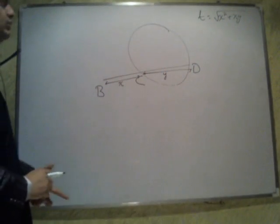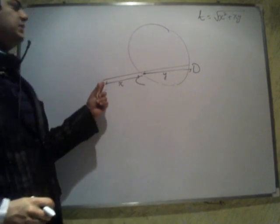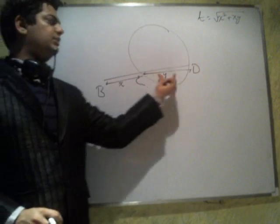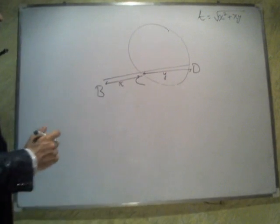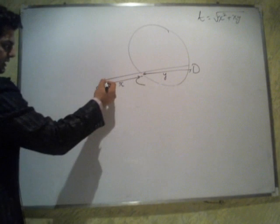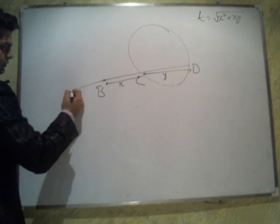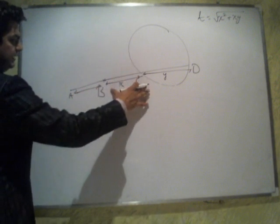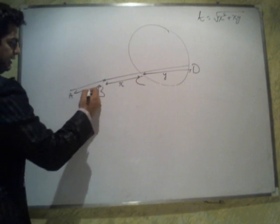I have known that length of the tangent from this point would be under root of this square plus this into this. Therefore, what I am trying to do is, I am trying to produce CB to A, such that CB and BA are same.